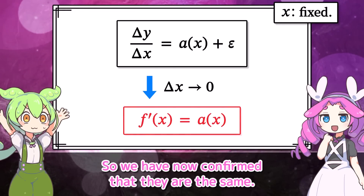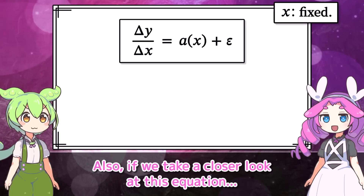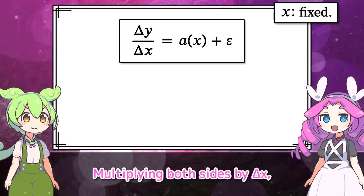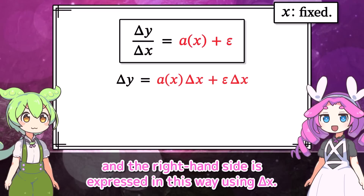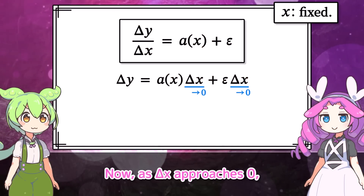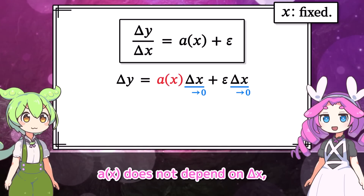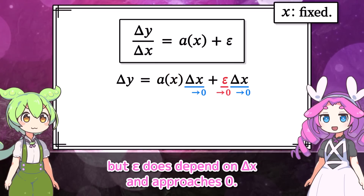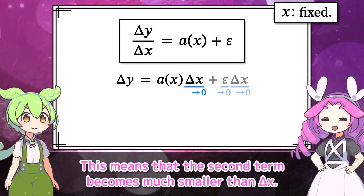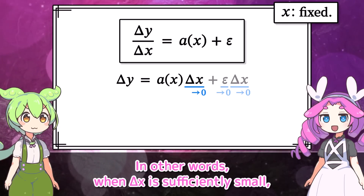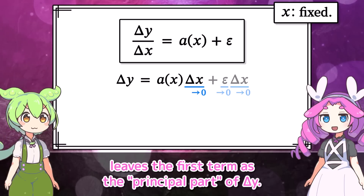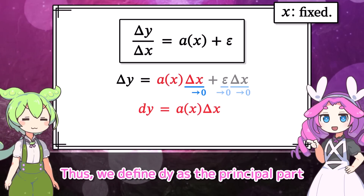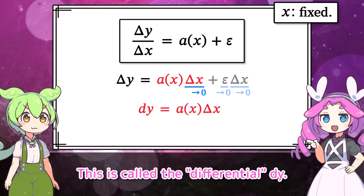Also, if we take a closer look at this equation and multiply both sides by delta x, the left-hand side becomes delta y, and the right-hand side is expressed using delta x. As delta x approaches zero, a of x does not depend on delta x, but epsilon does depend on delta x and approaches zero. This means the second term becomes much smaller than delta x. In other words, when delta x is sufficiently small, ignoring the small part relative to delta x leaves the first term as the principal part of delta y. Thus, we define dy as the principal part of the small change in y. This is called the differential dy.